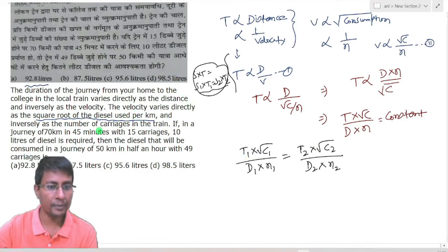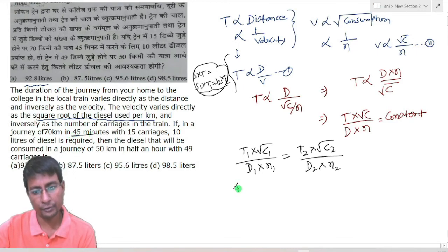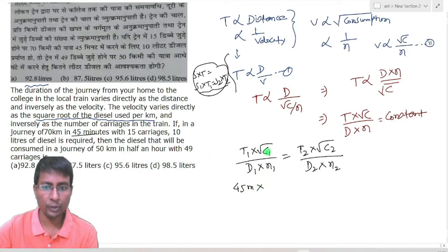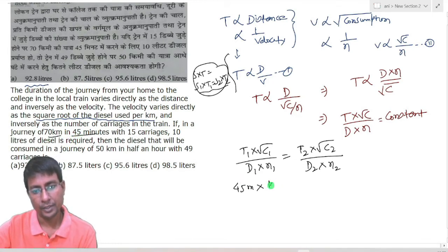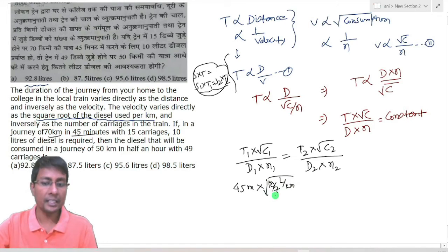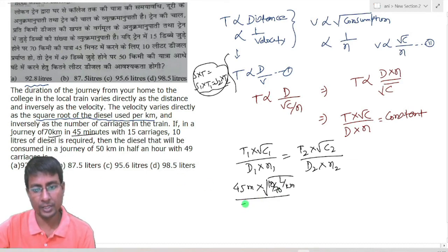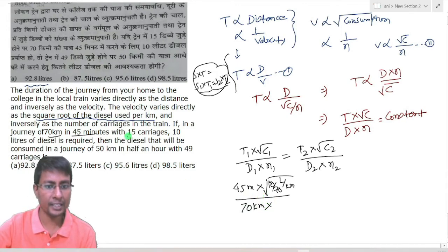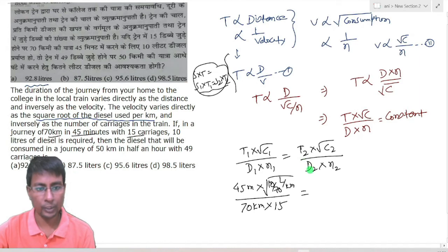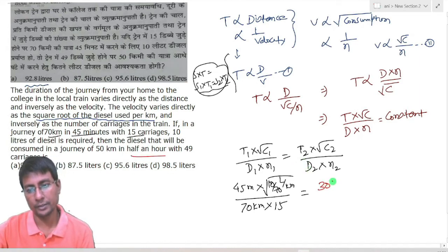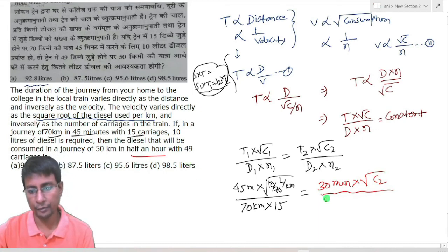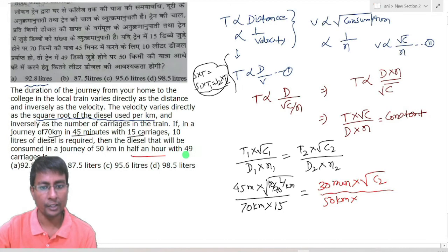In the first case, time T1 is 45 minutes. Consumption is 10 liters for 70 km, so consumption rate is 10/70 liters per km, under root as it is. Distance is 70 km and number of carriages is 15. In the second case, time T2 is 30 minutes (half an hour). Consumption C2 is to be found. Distance is 50 km and number of carriages is 49.